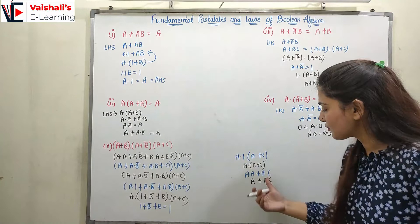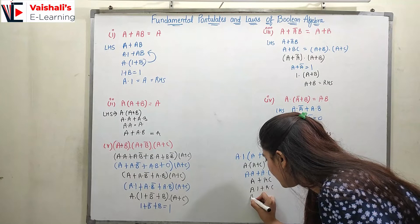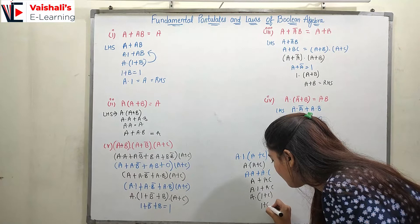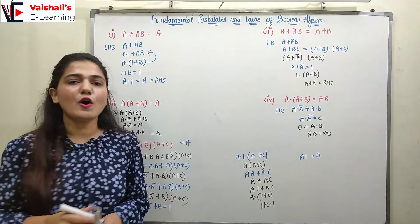So we have a·1 + a·c, where we take a common: a·(1 + c). Since 1 + c = 1, we get a·1 = a. So the final simplified result is a. This shows that you can simplify any complex Boolean expression and arrive at a simplified result.